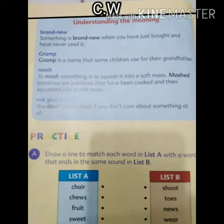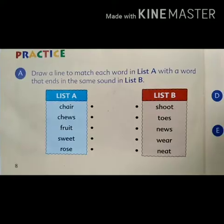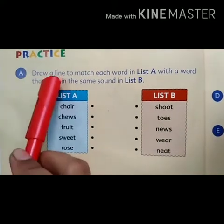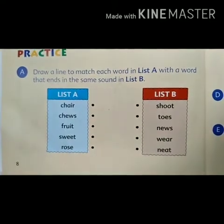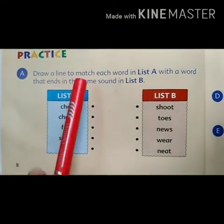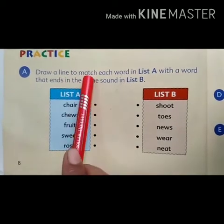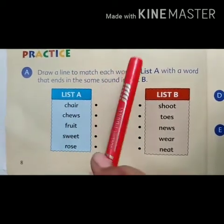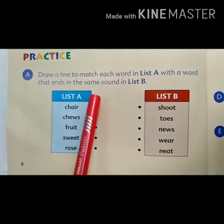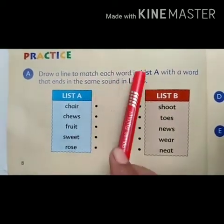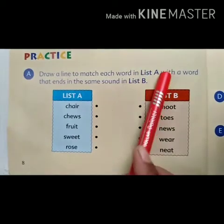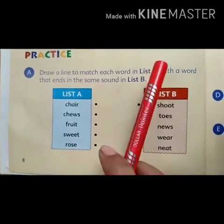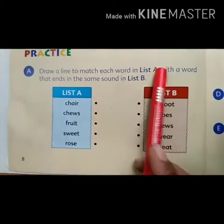Now open your page number 8 and start. Draw a line to match each word in list A with a word in list B.